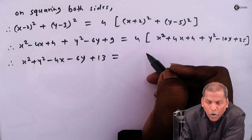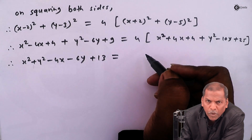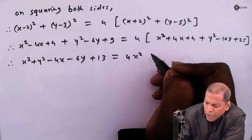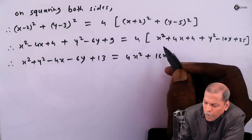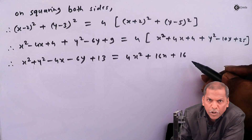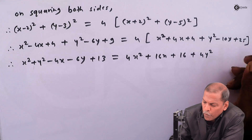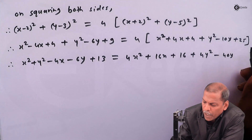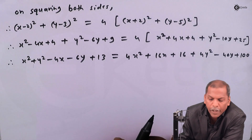Now we open the bracket on the right side by multiplying each term by 4, so we get 4x squared plus 16x plus 16 plus 4y squared minus 40y plus 100.